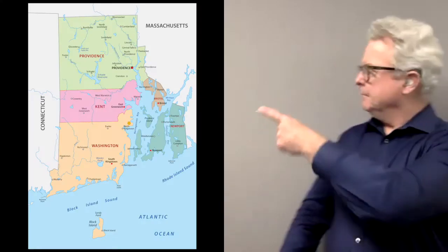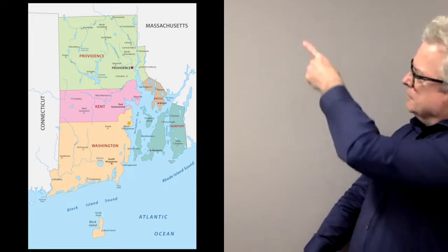Here in Rhode Island, we have five counties. If you look at the map, they are as follows: Bristol County, Kent County, Newport County, Providence County, and Washington County. Those are the five counties in the state of Rhode Island.